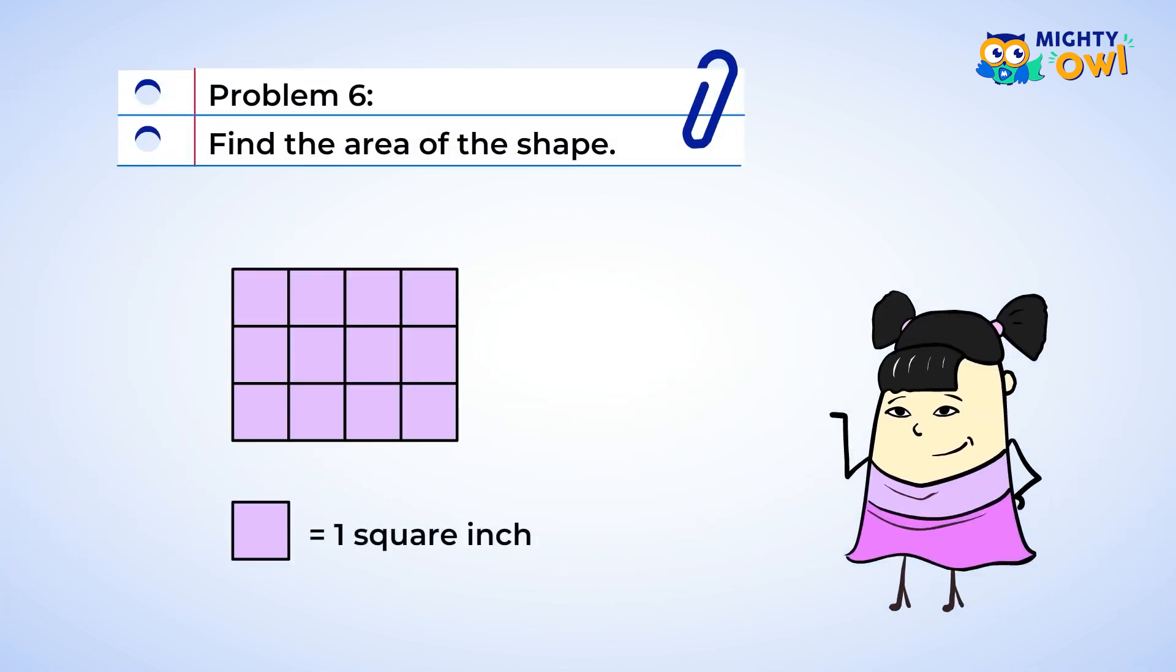Okay. Let's look at one more problem where we need to find the area of the shape. Each box is one square inch. Let's count how many square inches are in the first row. Hmm. Looks like there are four. Okay. There are four more squares in the second row. So we have eight so far.